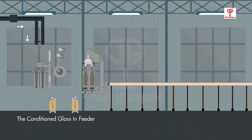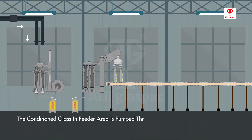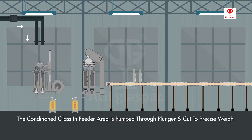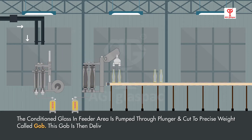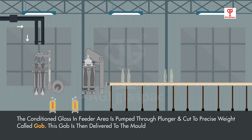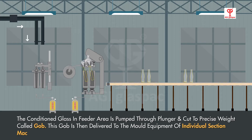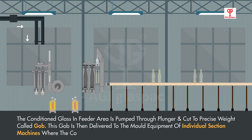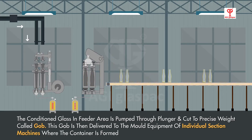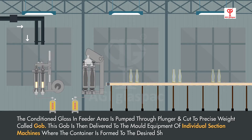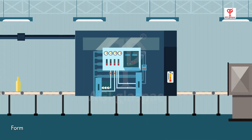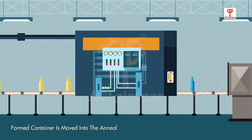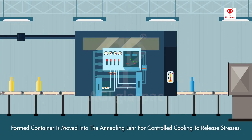Stage 3: Forming Process — Gob Formation and Container Forming. The conditioned glass in the feeder area is pumped through a plunger and cut to a precise weight, called a gob. This gob is then delivered to the mold equipment of individual section machines where the container is formed to the desired shape. The formed container is moved into the annealing lehr for controlled cooling to release stresses.